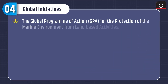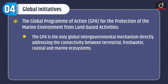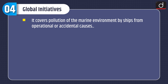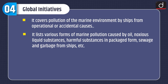Moving on to global initiatives. First is the Global Programme of Action (GPA) for the protection of the marine environment from land-based activities — the only global intergovernmental mechanism directly addressing the connectivity between terrestrial, freshwater, coastal, and marine ecosystems. International conventions include the Marpol Convention 1973, which covers pollution of the marine environment by ships from operational or accidental causes, listing pollution caused by oil, noxious liquid substances, harmful substances in packaged form, sewage, and garbage from ships.